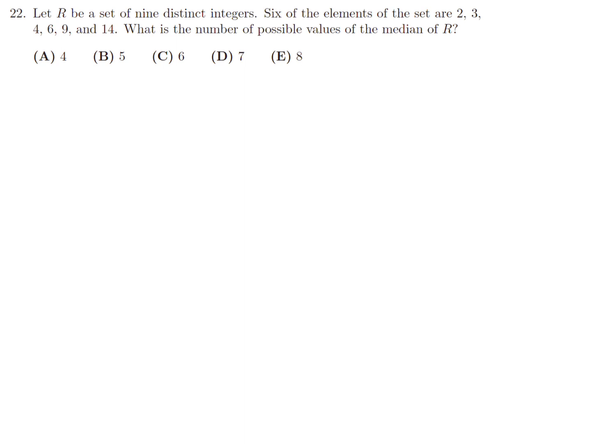Let R be a set of nine distinct integers. Six of the elements of the set are 2, 3, 4, 6, 9, 14. What is the number of possible values of the median of R? All right. Well, let's discuss this. We have 2, 3, 4, 6, 9, and 14. Now, these are just six of the numbers. There's nine in total. So, I'll let the other three be A, B, C. I don't know what those numbers are.